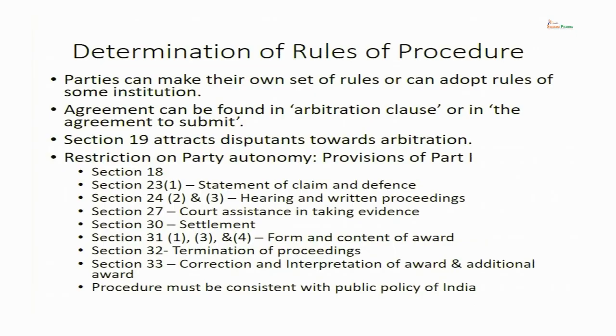What is the extent of freedom? Parties can make their own set of rules or adopt rules of some institution. For example, you and I can write that in case of any dispute we will refer to arbitration to be done according to the rules of the International Chamber of Commerce. This designation can be found in the arbitration agreement or in the submission agreement — terms we have discussed in section 7. That is the extent of freedom which parties have, and therefore section 19 attracts disputants towards arbitration.